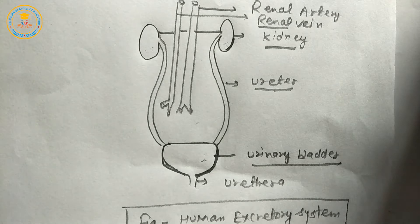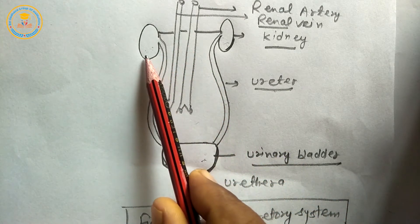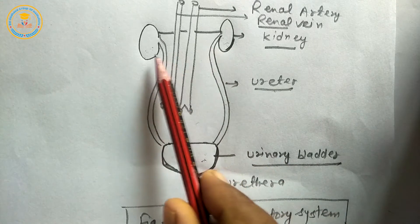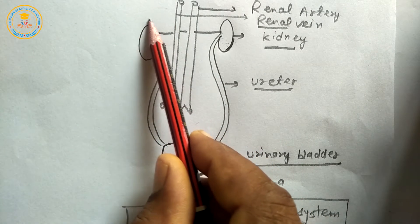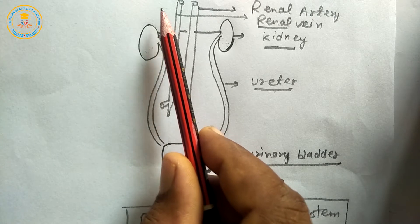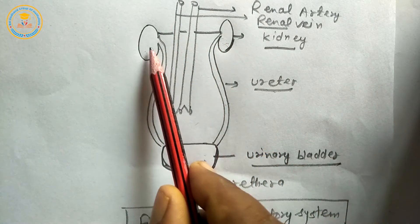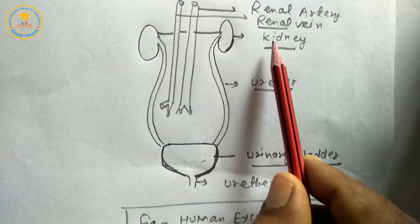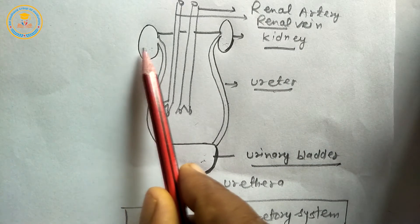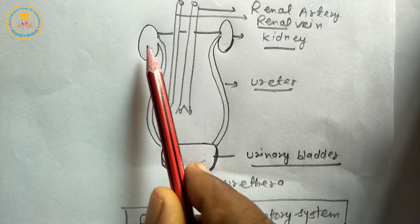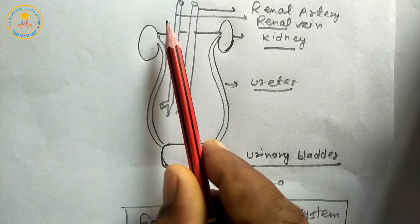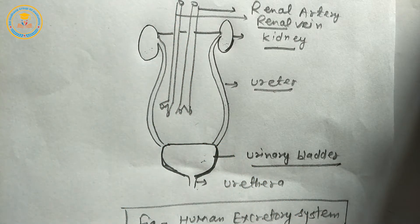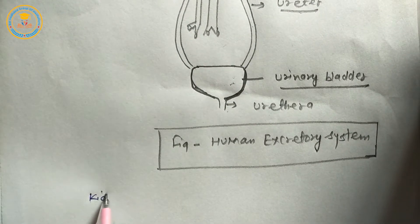Some specific points: this is the right kidney and this is the left kidney. The right kidney is located slightly below the left kidney because on the upper side of the right kidney, the liver is situated.